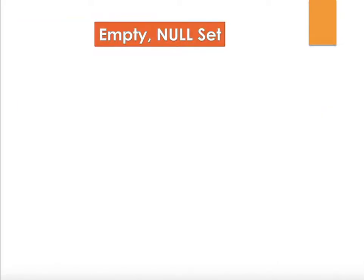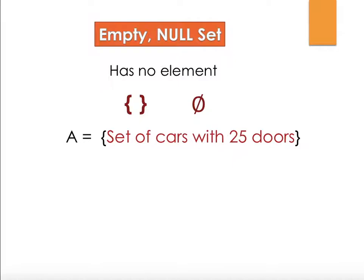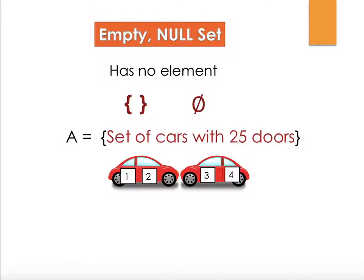Let's look at the types of sets. The first is the empty or null set, which has no elements. We write it as two curly brackets with nothing inside, or using the symbol phi — the zero with a slash through it. An example of a null set: a set of cars with 25 doors. Since cars have at most a few doors, 25 is impossible, so the set returns no elements. The cardinality of the empty set is 0, which is exactly why cardinality can be greater than or equal to 0.